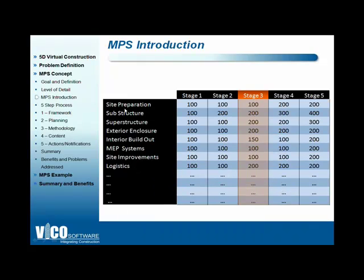For each building element category — site preparation, substructure, and others — you define the targeted level of detail per stage. The targeted level of detail depends on what you want to achieve in that stage. In stage 3, you may need to make a decision about interior finishes and therefore need more detailed information. In stage 4, you may want to start scheduling your substructure, so you need to be at LOD 300, meaning exact locations and dimensions of foundation elements must be known.